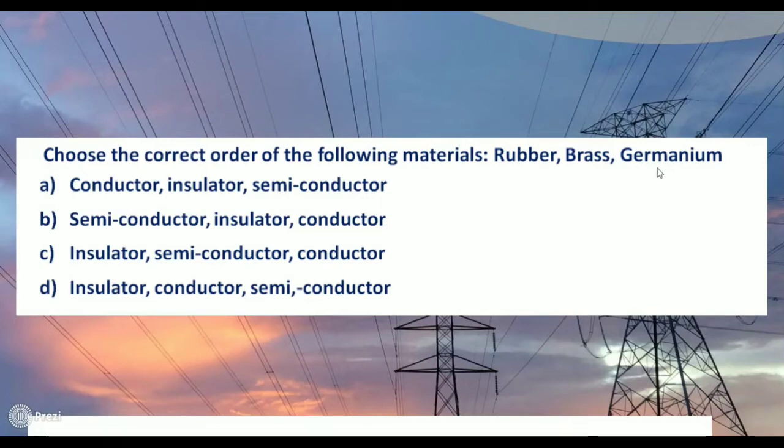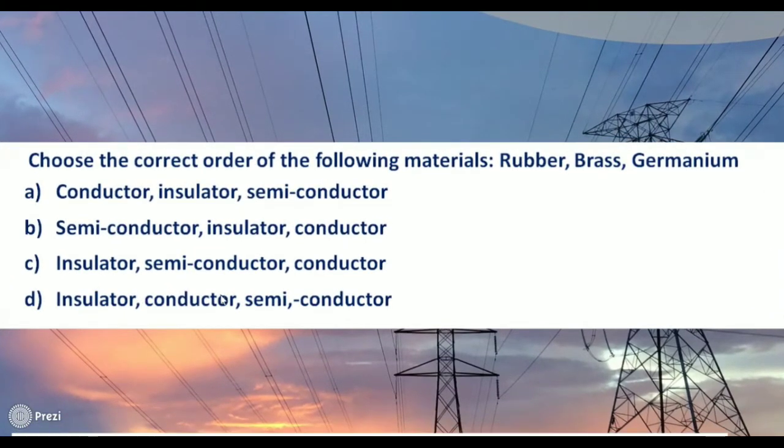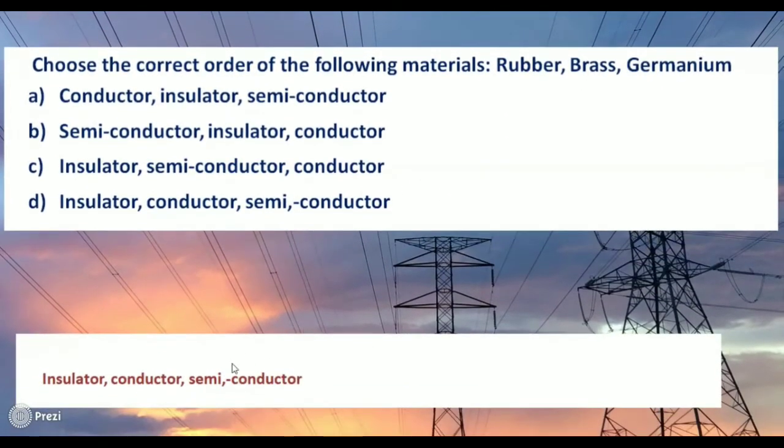Brass is a conductor and germanium is a semiconductor. So option D is correct: rubber is insulator, brass is conductor, germanium is semiconductor. The order is insulator, conductor, semiconductor.